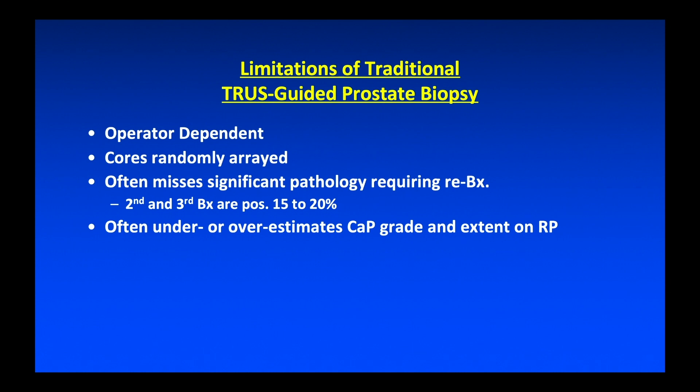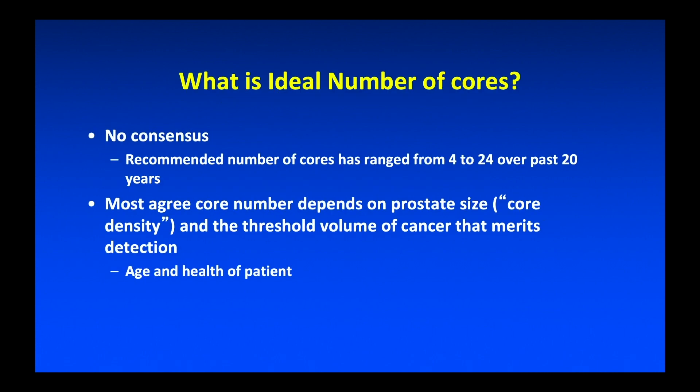Even today, this biopsy remains significantly operator-dependent. No matter whether you call it a systematic biopsy, it's random. The cores — some are close together, some are far apart. Everybody knows that we miss significant pathology requiring re-biopsy, and even if we hit the cancer, we don't know anything about the location of the cancer, and it often overestimates or underestimates the cancer. We don't even know what the ideal number of cores are.